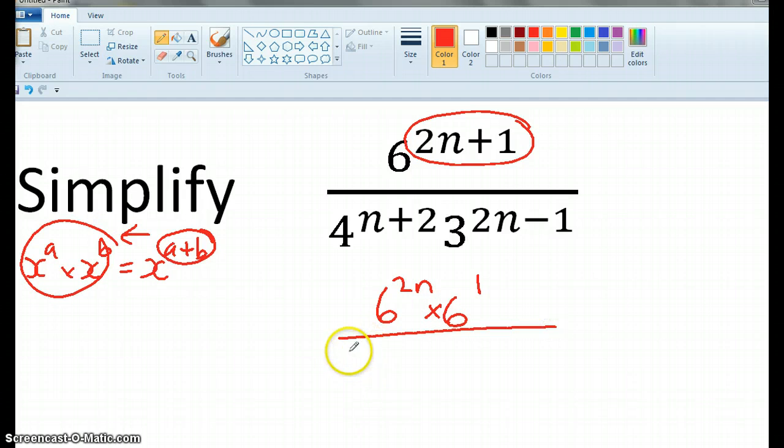I'll do the same at the bottom, 4 to the n times 4 squared times 3 to the 2n times 3 to the negative 1. So that's my first step.